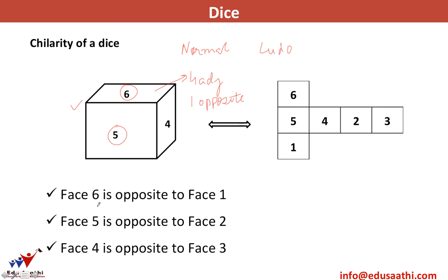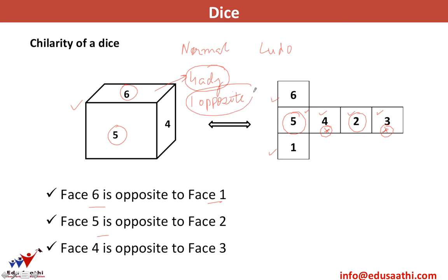In a normal dice, the face six is opposite to face one, face five is opposite to face two, and face four is opposite to face three. So if six is opposite to face one, it means that the other faces — five, four, two, and three — are adjacent to face six. Every face will have four adjacent faces and one opposite face.